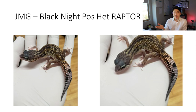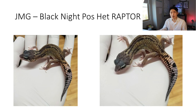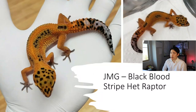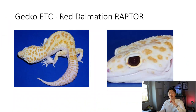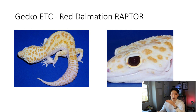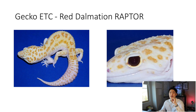That's how they place it as a het Raptor — but if it has het, that means it still carries the Eclipse genetics, just not visual Eclipse. The next one is also from JMG: Black Bloodstrap Het Raptor, which is a more orange color. Then the third one is the Gekko ETC Dimension Raptor. In my opinion, it personally looks a little bit like a WY Tremper. It looks pretty cool, and that's one of the examples I could find online.